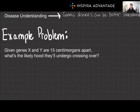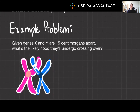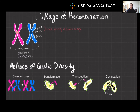Here's one example problem: given that genes X and Y are 15 centimorgans apart on a chromosome, what is the likelihood they'll undergo crossing over? Here's a chromosome diagram — let's say these genes are 15 centimorgans across. Since one centimorgan equals a 1% recombination probability, the answer is 15%.